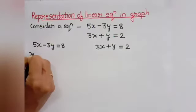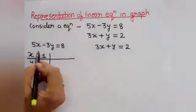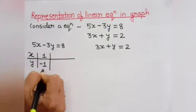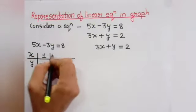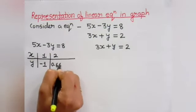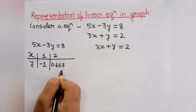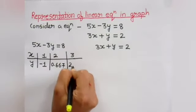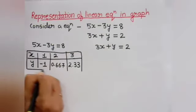इस first equation में हम अगर x = 1 consider करें, तो x की जगह 1 put करने पर हमें y की value मिलती है −1। उसी तरह से अगर हम x = 2 put करते हैं, तो हमें y की value मिलती है 0.667। हो सकता है कि value fraction में आए, तो उसे decimal में convert कर सकते हैं। एक और point: अगर x = 3 put करें, तो y की value मिलती है 2.33। यह 3 points हमने first equation के लिए लिए हैं।